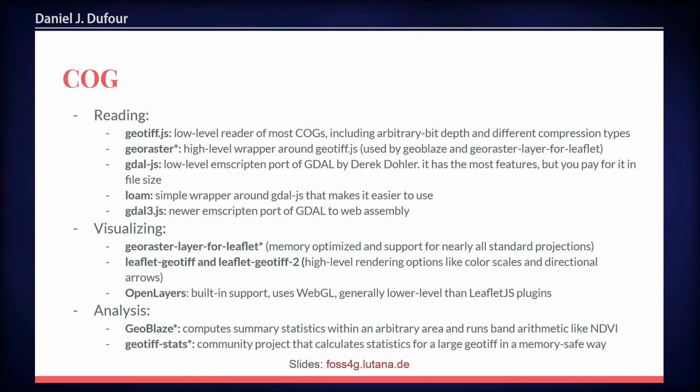So this slide is on COGs. COGs stands for Cloud Optimized GeoTIFF. A Cloud Optimized GeoTIFF is a TIFF image with geospatial metadata, and it supports partial read requests, which means you can grab just part of that image — you don't have to read the whole thing. There are a lot of different options when it comes to reading, visualizing, and analyzing, and we're not going to have time to go over every one.